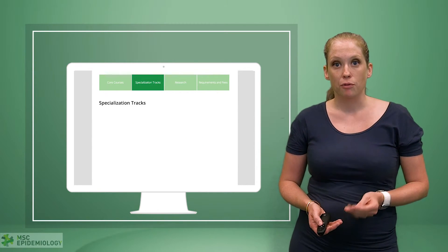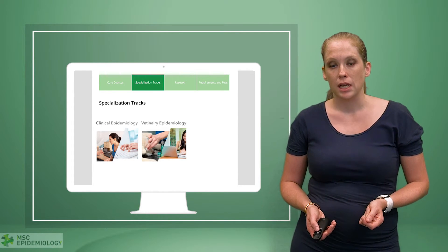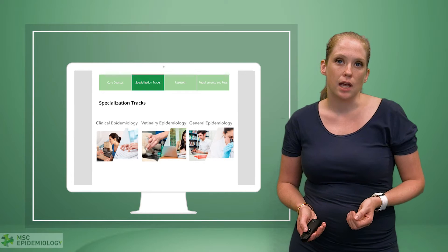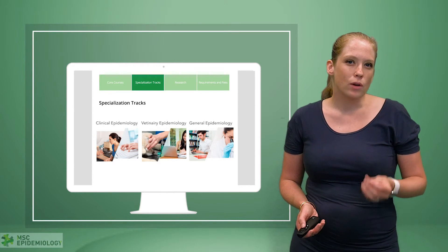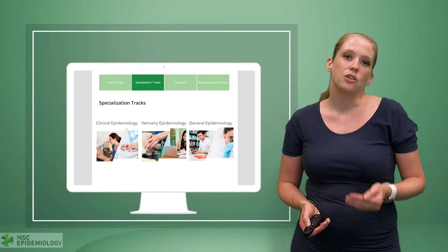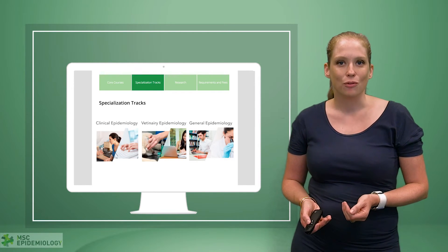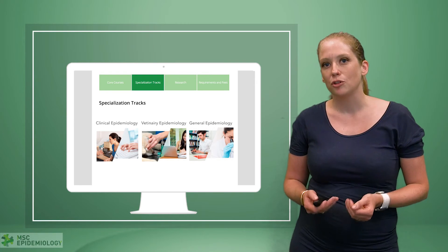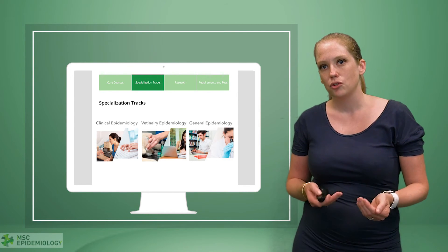For specialization programs online, we currently have three different specialization programs available: clinical epidemiology, veterinary epidemiology, and a general version. Each specialization track covers 15 ECTS, resulting in about 30 weeks, with 10 topics addressed. Only five of these topics are obligatory; the other five are completely up to you. So even if your interest lies within clinical epi, you can still take general courses, veterinary epi, or infectious diseases. You can adjust your specialization courses according to where you lack knowledge or where your interest lies during your research.